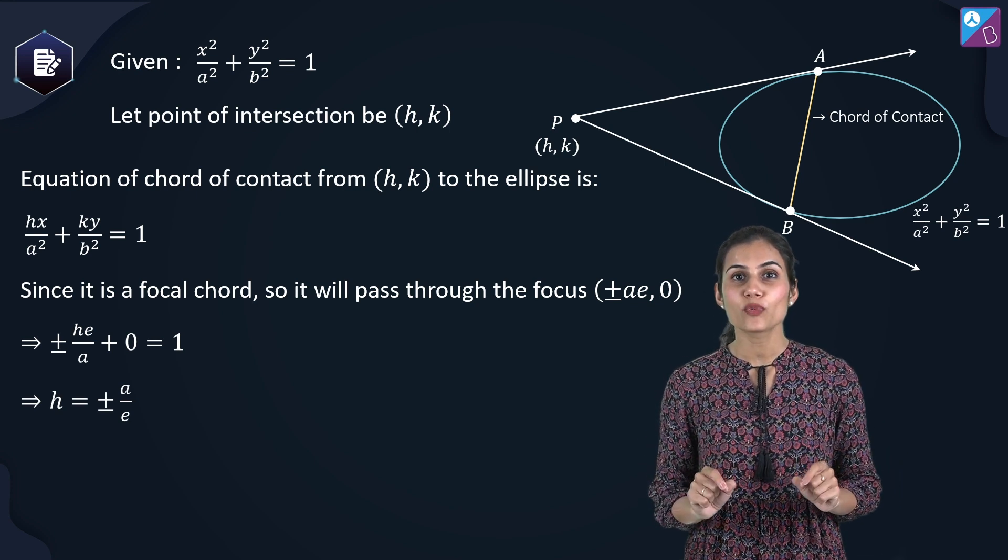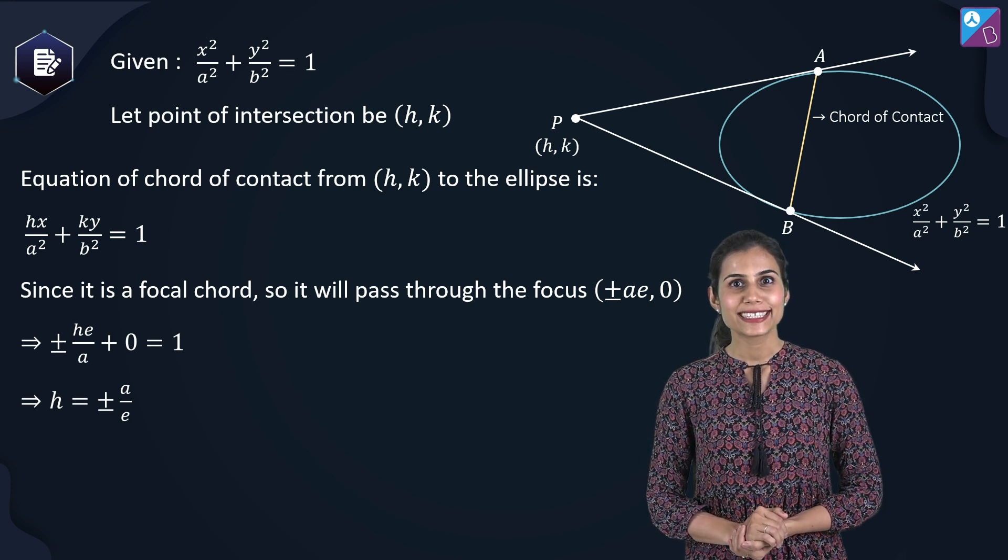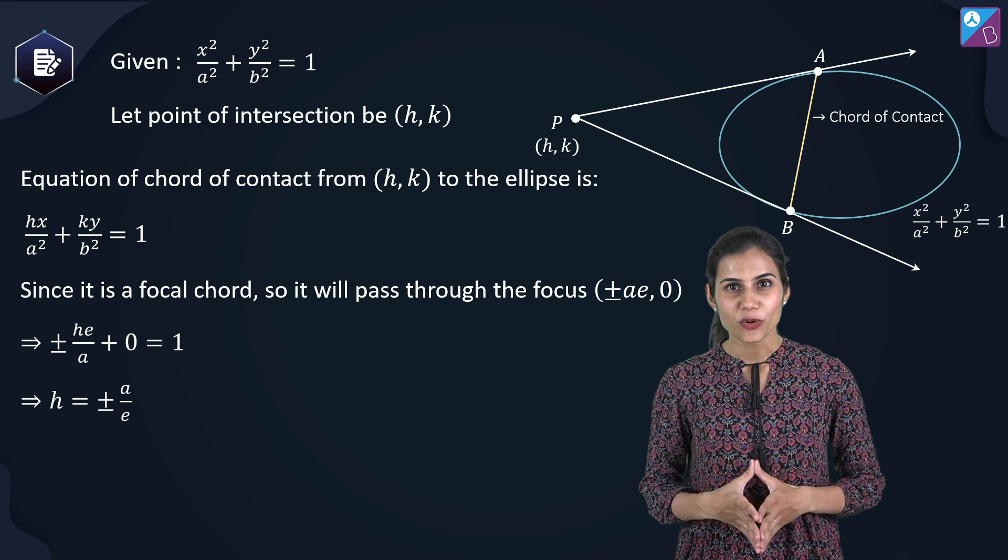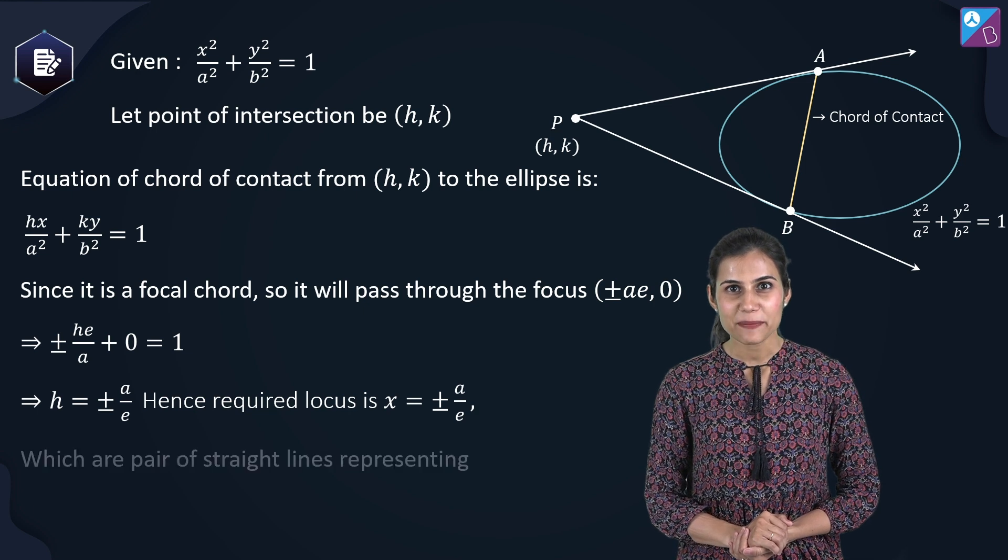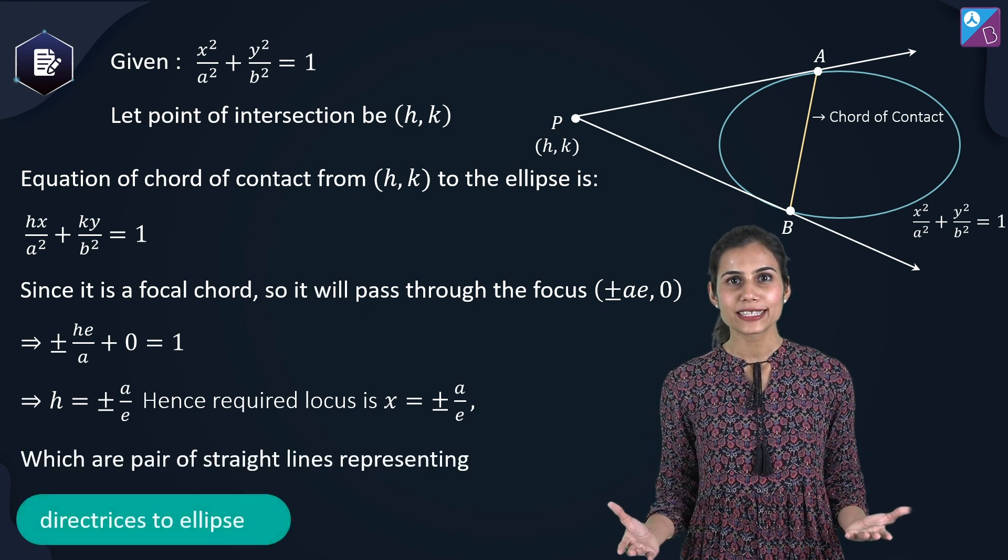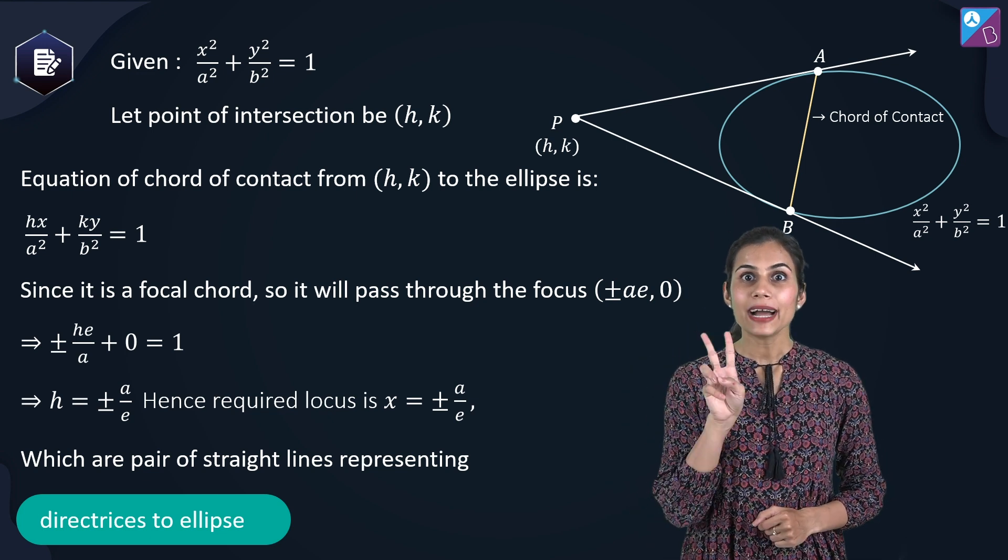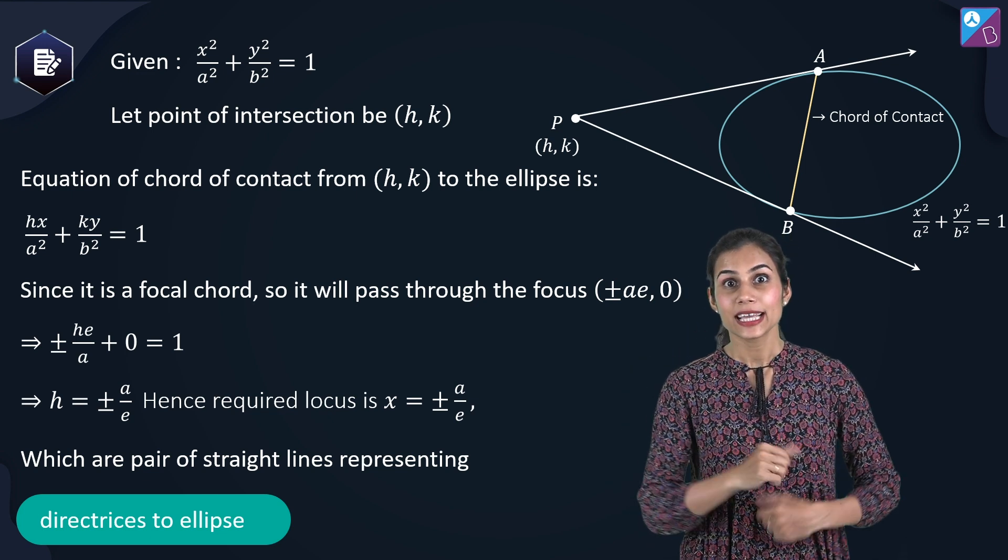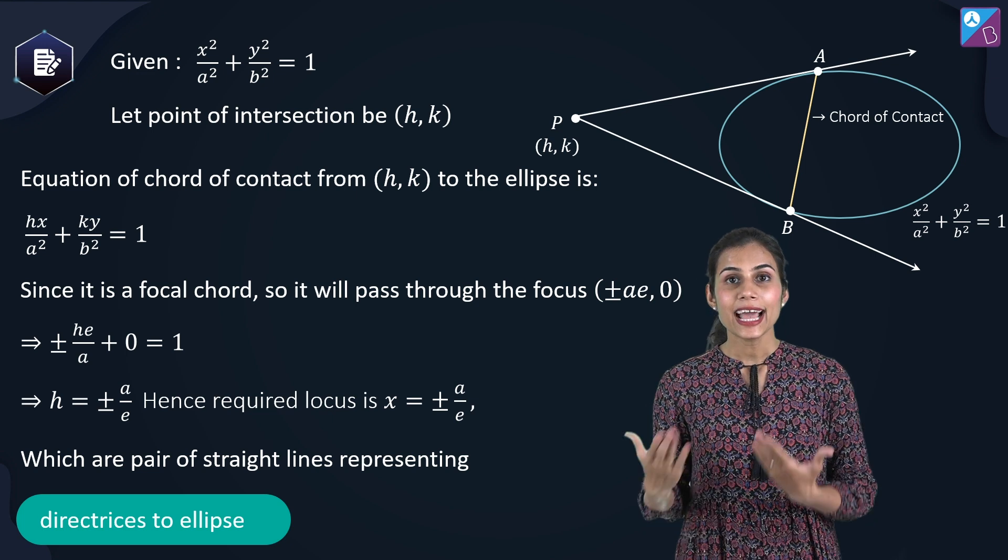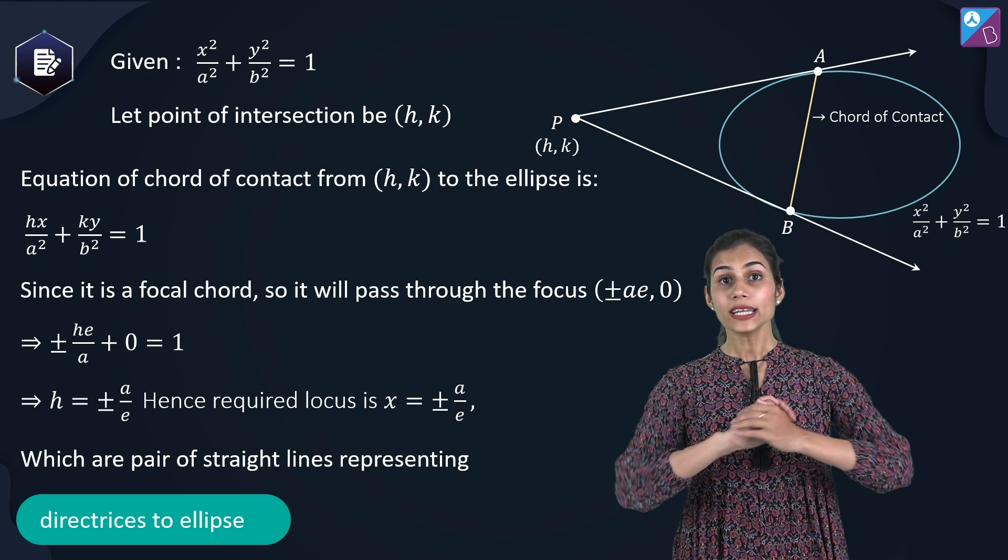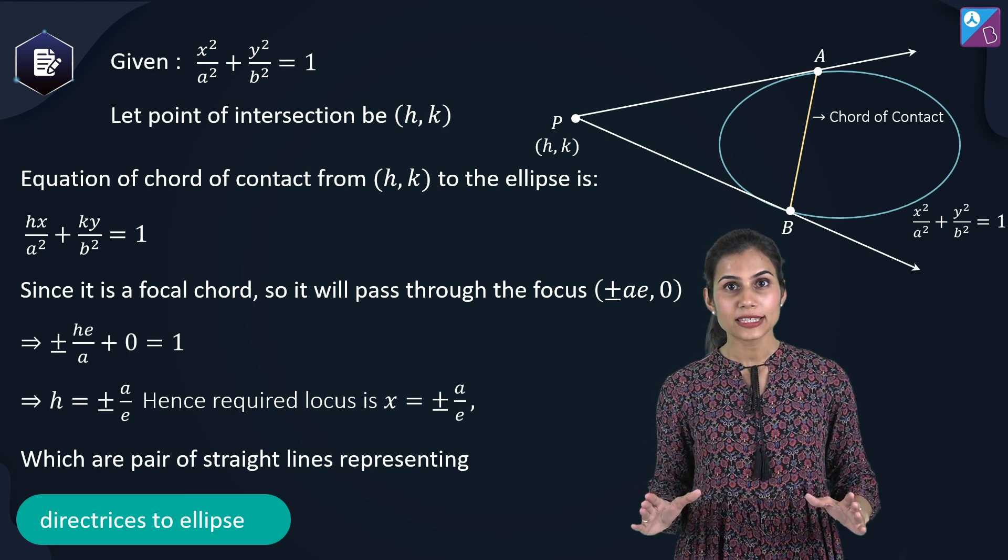h equals plus minus a by e. This is the point when you replace h with x and what you get is your required locus x equals plus minus a by e. Can you identify what this is? This is representing the equation of both my directrices to the given ellipse. x equals plus a by e and x equals minus a by e. So yeah, we are done with our solution. We have got our answer.